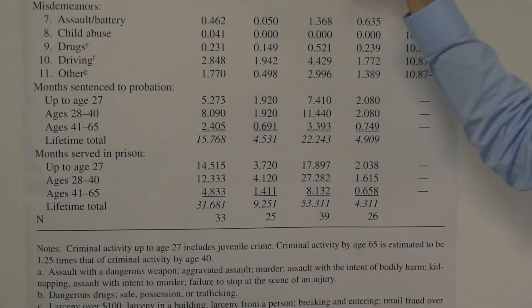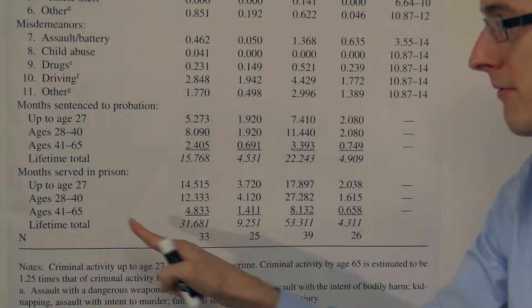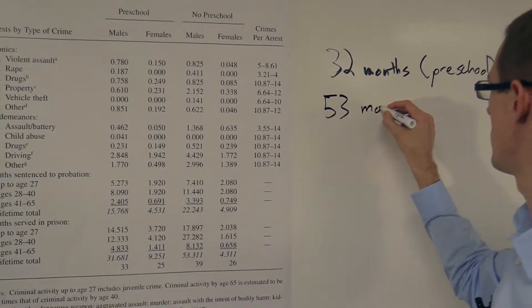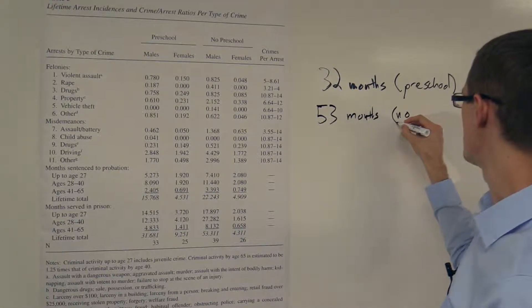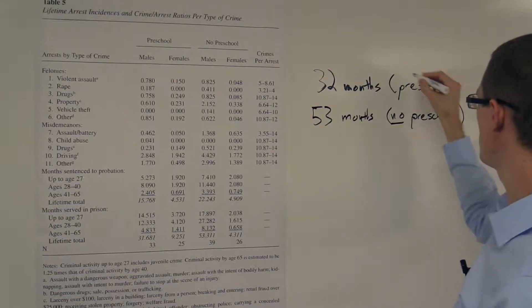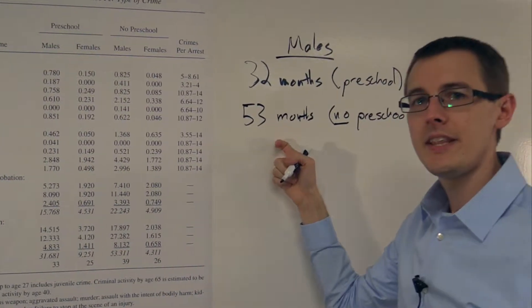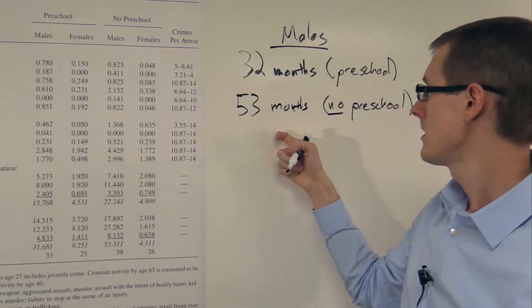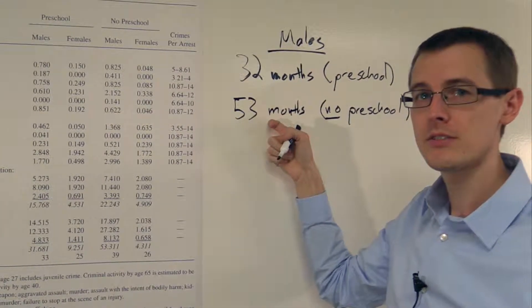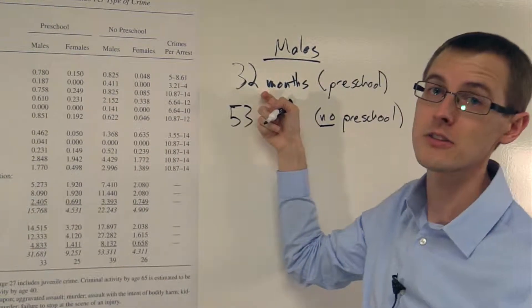The males who did not go to preschool, they had an average of 53 months of lifetime served in prison, and this is the no preschool group, and it's for males. So we see that it looks like there's a very large treatment effect for going to preschool. It drops the average from 53 months served in prison over the course of your life, down to 32 months. So that looks really good.